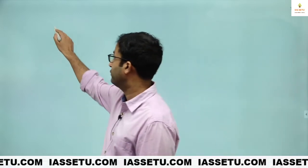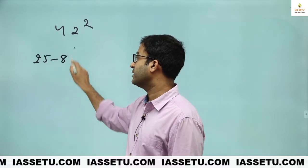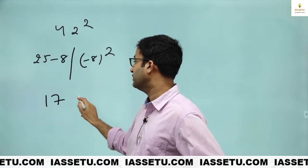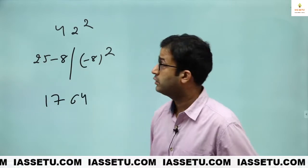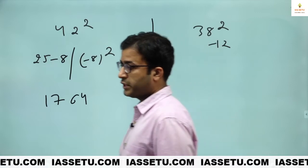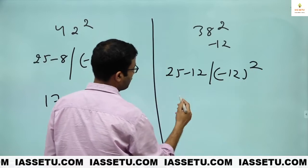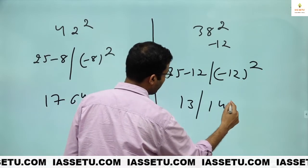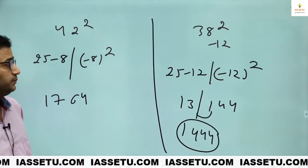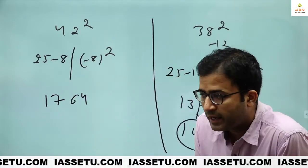Now you try this. 42 square. 25 minus 8 minus 8 square. What is 25 minus 8? 17. This is 64. 1764. Now 38 square. Quick. 25 minus 12. But be careful about the carry forward. So this is 13. This is 144. 1 carry forward. 1444. Because this is positive value. 1 to add here. Carry forward to add here.